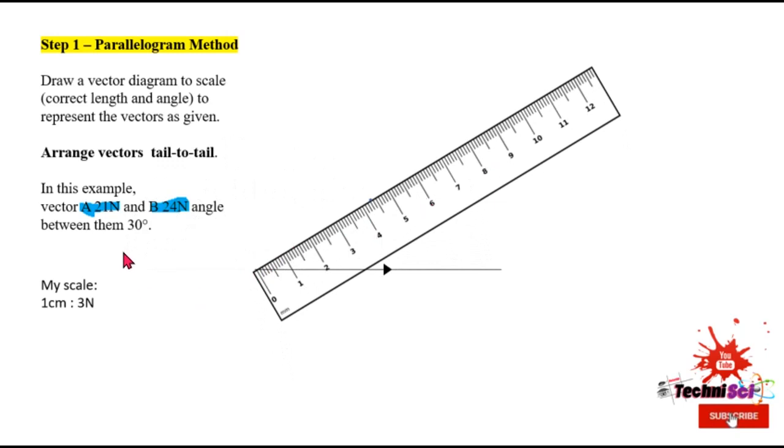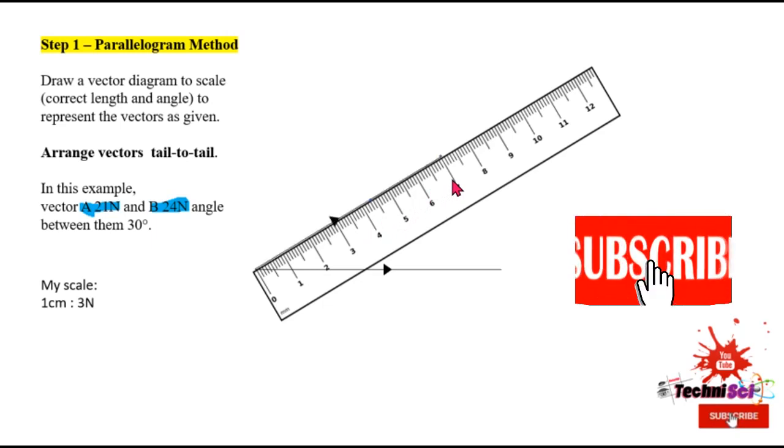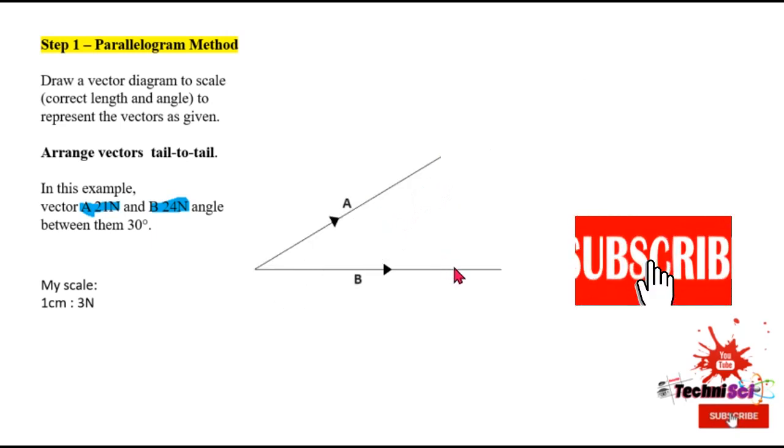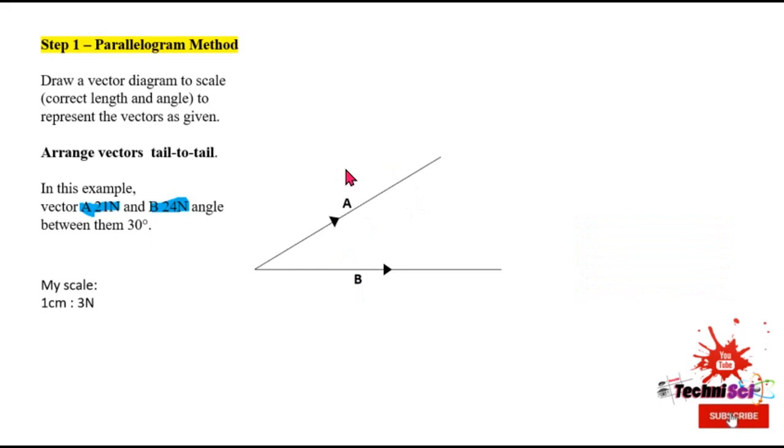Now at a scale of one centimeter to three newtons, how long would my line need to be for me to represent 21 newtons? So let's check: 3, plus 3 is 6, plus 3 is 9, plus 3 is 12, plus 3 is 15, plus 3 is 18, plus 3 is 21. So for me to get a line that represents 21 newtons at a scale of 1 to 3 newtons, I would have to draw it at seven centimeters. So now I have A and B represented.